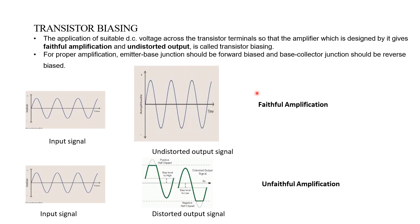The transistors are of two types: PNP transistor and NPN transistor. There are three terminals in each type of transistor — emitter, base, and collector — for both PNP and NPN transistors.